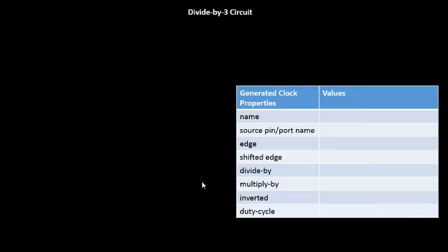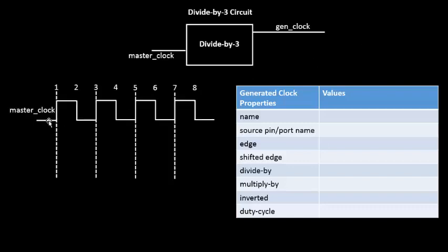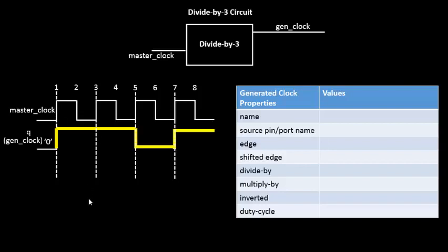Let's look at another example: a divided-by-3 circuit. We have a black box that receives the master clock as input and outputs a generated clock which is a divided-by-3 clock. Three clock cycles at the input represent one clock cycle at the output, so the output clock period is three times the master clock period.